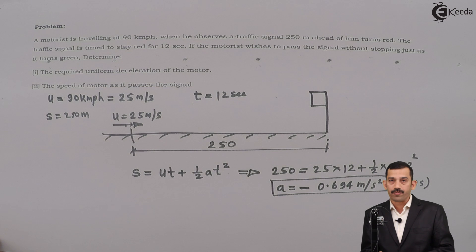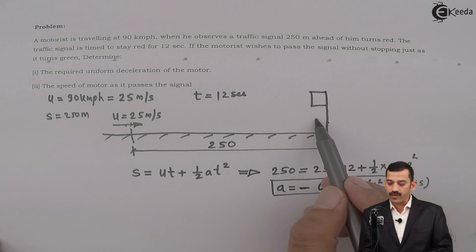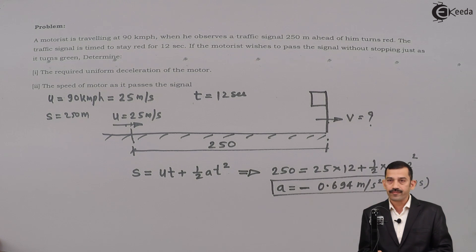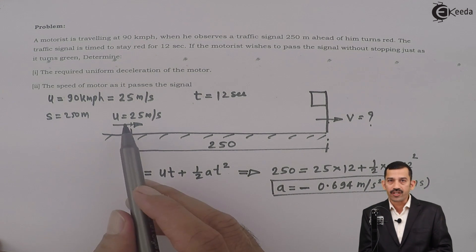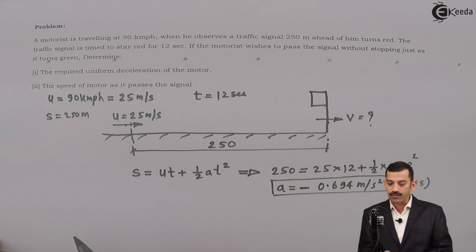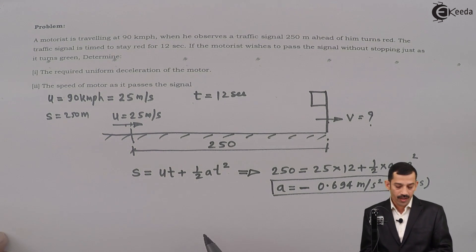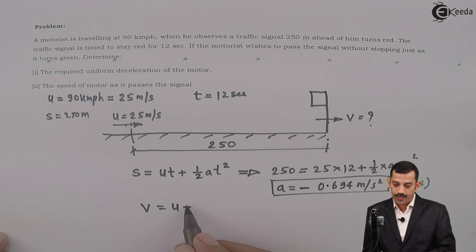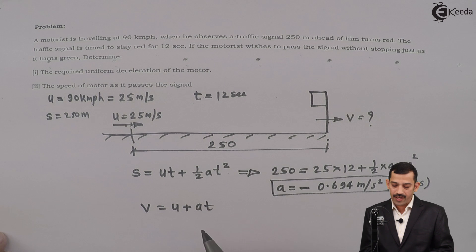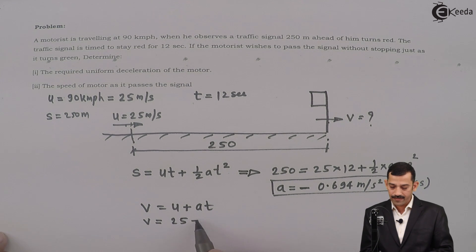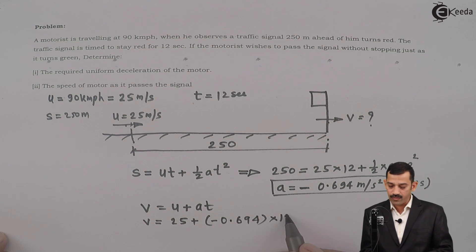Now for the speed of the motor as it passes the signal — at that location, what is the final velocity? We know S is 250 meters, initial velocity is 25 meters per second, time is 12 seconds, and acceleration is minus 0.694 meters per second squared. Using the equation V equals U plus AT: V is the unknown final velocity, U is 25, plus minus 0.694 into time T which is 12 seconds.